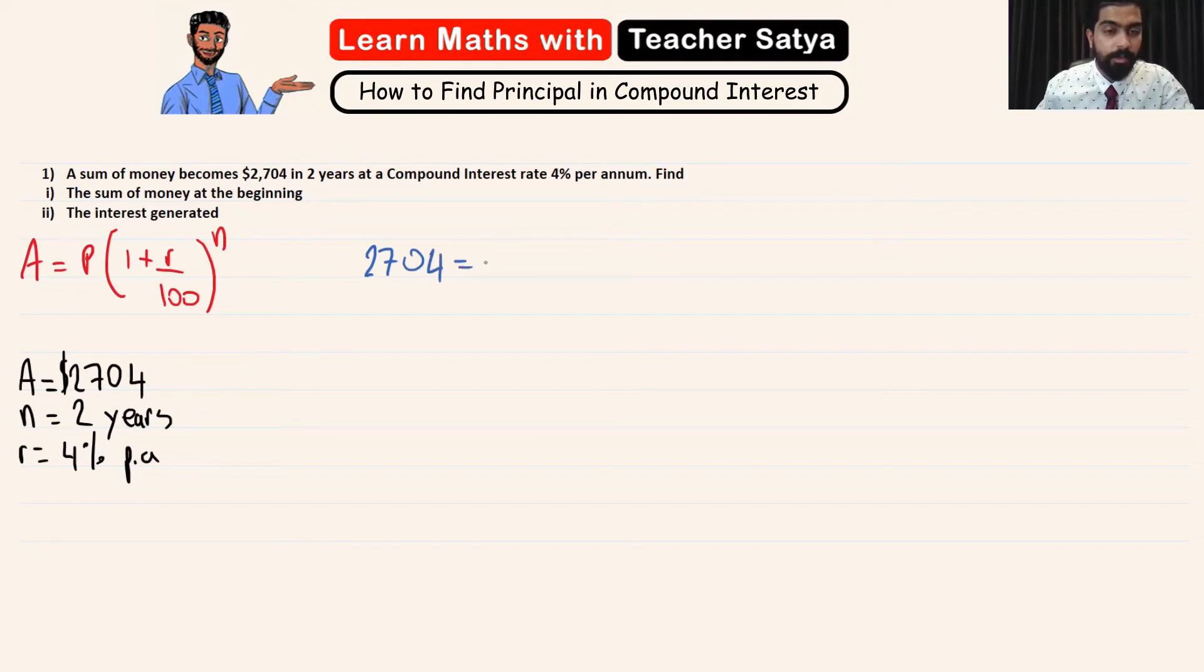So let's go ahead and substitute these values in the formula. So we have 2704 = P(1 + 4/100)^2. Let's go ahead and solve inside the bracket first.